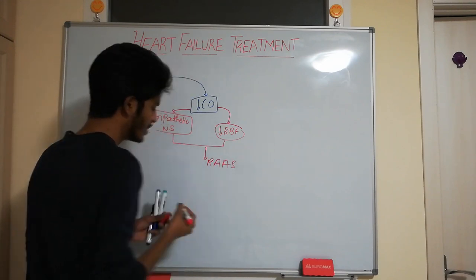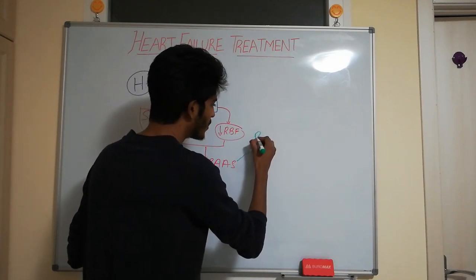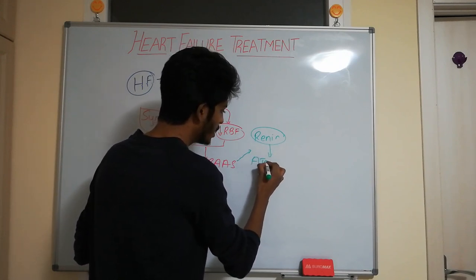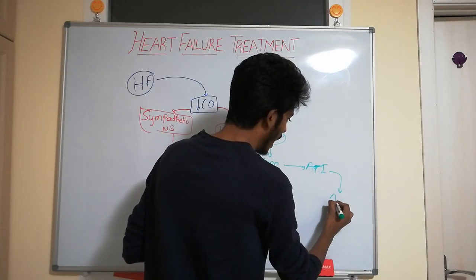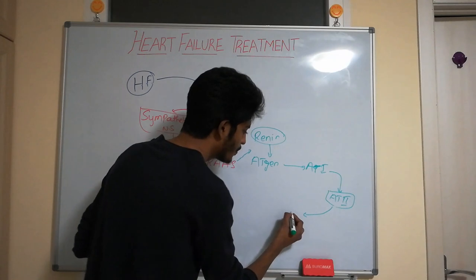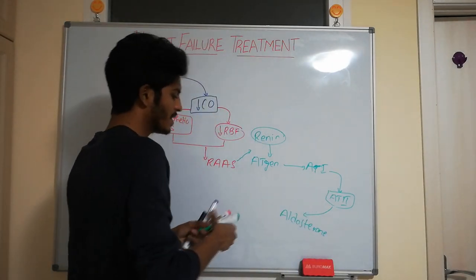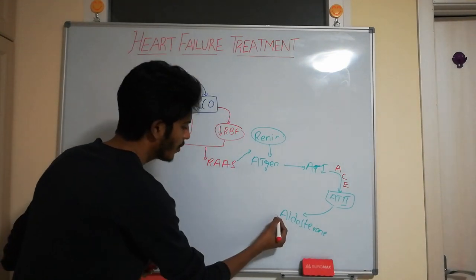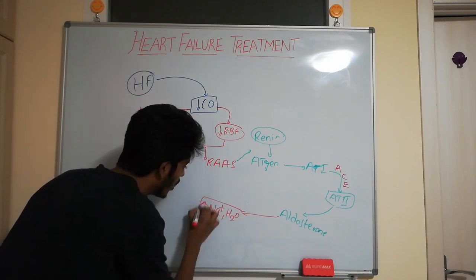When the renin-angiotensin-aldosterone system gets activated, renin is released from the kidney. Renin converts angiotensinogen to angiotensin 1, which is further converted into angiotensin 2. This conversion of angiotensin 1 to angiotensin 2 is done by an enzyme called angiotensin-converting enzyme, or ACE. Angiotensin 2 then stimulates the release of aldosterone.